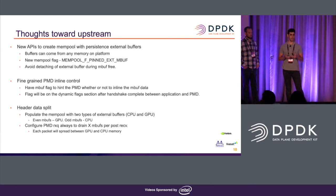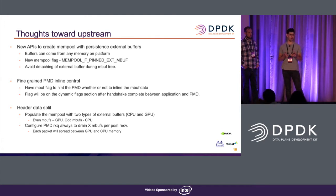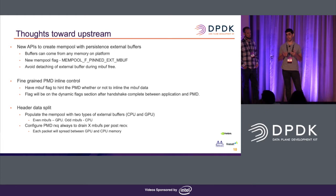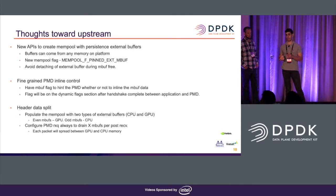Header data split can also be done by populating a mempool with non-homogeneous MBUFs — one for CPU memory, one for GPU memory with potentially different sizes — so the PMD chains two MBUFs and splits packet data between CPU and GPU memory. Additionally, some PMDs use inlining to reduce PCIe overhead and reach 100 gig line rates. Inlining is very efficient with host memory, but has large overhead with non-host memory, so we want fine-grained per-application control over when inlining is used to maximize bandwidth.